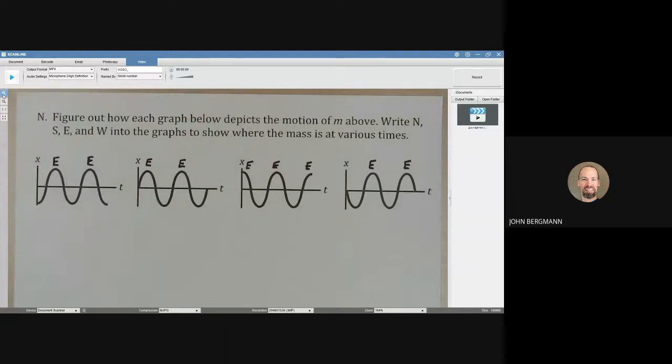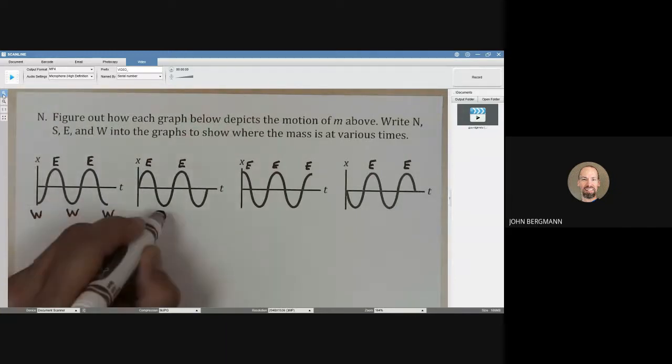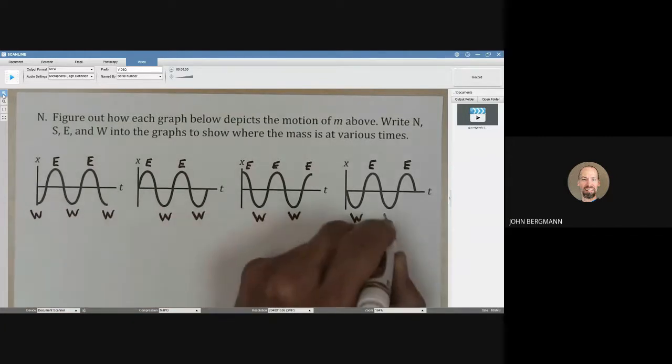Wherever the x value was negative, that was a west point. There we go.